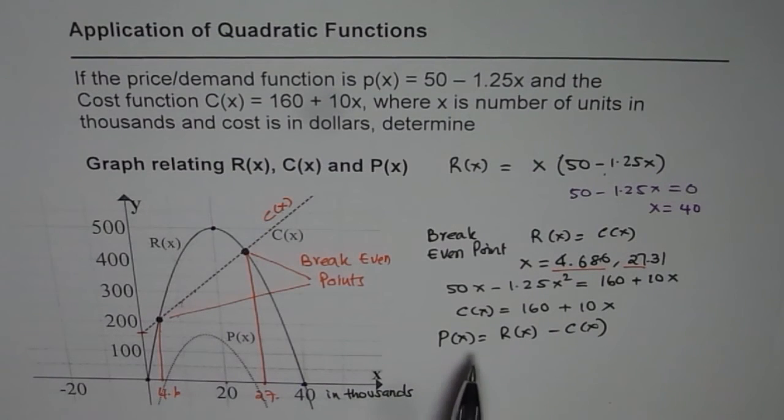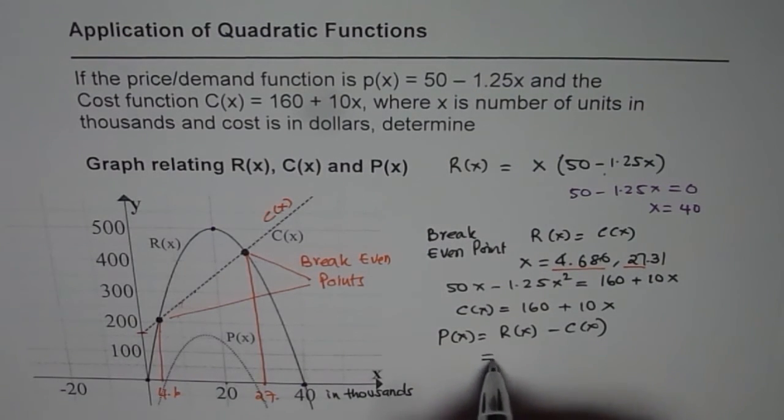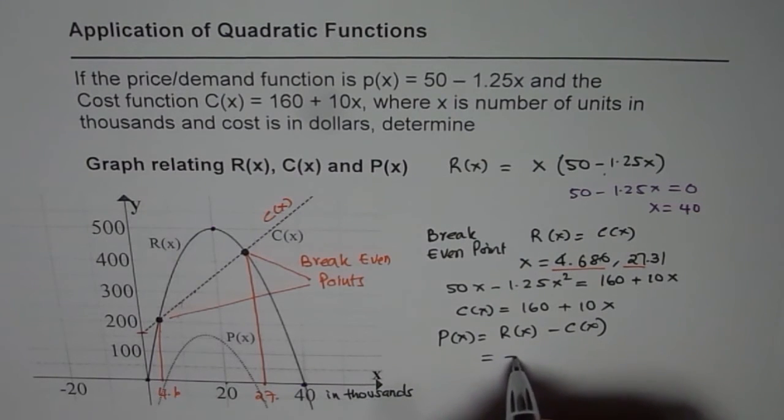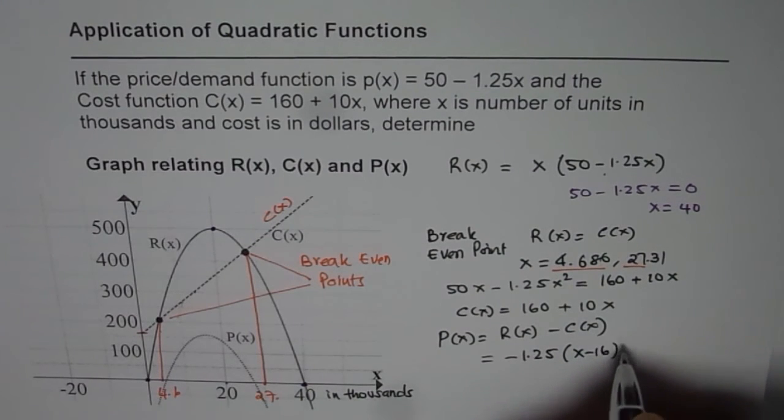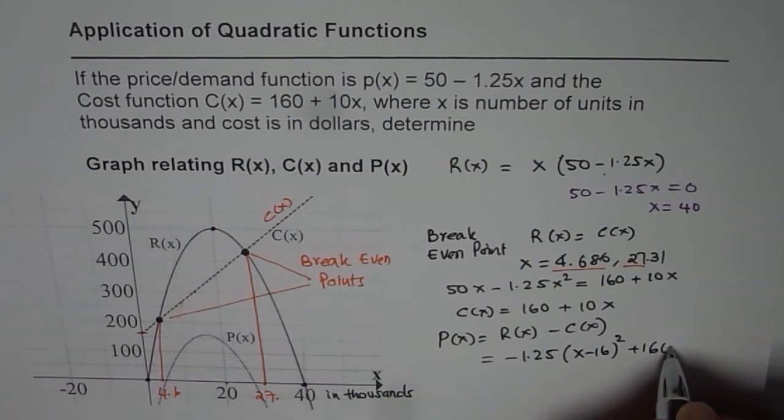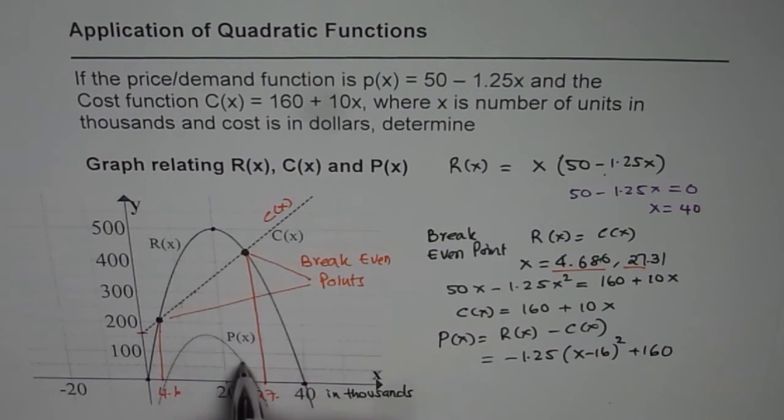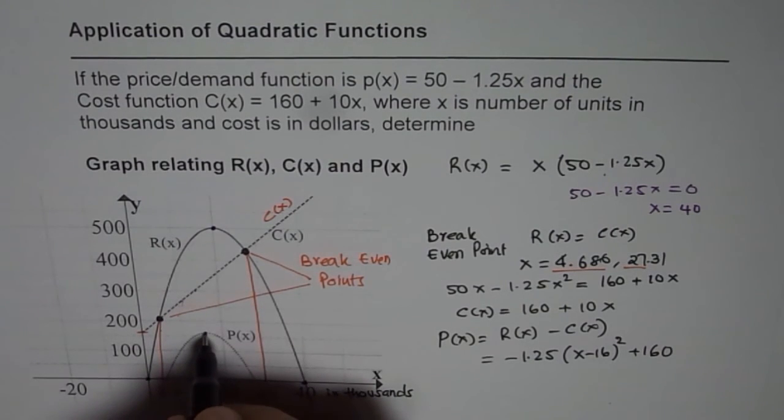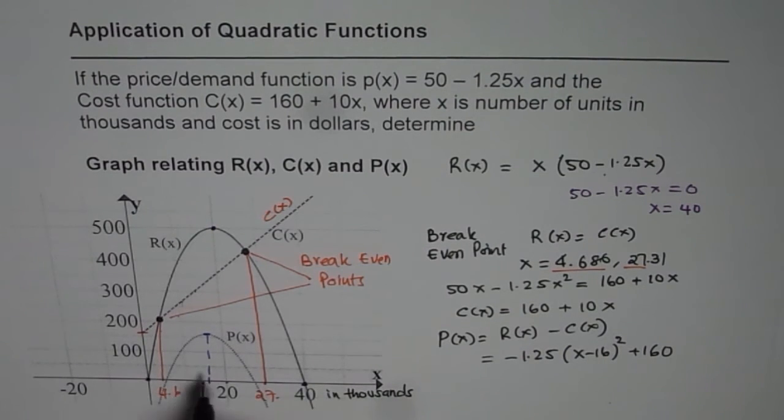We developed this model and we found out that the profit function could be written in the vertex form as equal to -1.25 times (x - 16)² + 160. Here is this graph for the profit function. As you can see we have vertex here, this point is for the vertex and this is at around 16 units, and the maximum profit for this is 160.